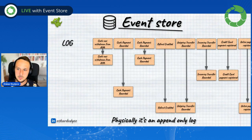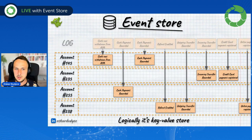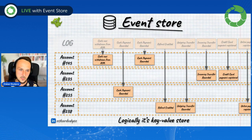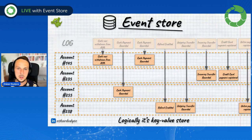However, all of those events are appended to a specific stream. If we move those events and show how they look, we get slices — and those slices are the specific streams. For instance, account 145 has two events: cash was withdrawn from ATM and cash payment recorded. Account 255 has cash payment recorded. So our streams are kind of like indexes that link to the append-only log to build the specific records.